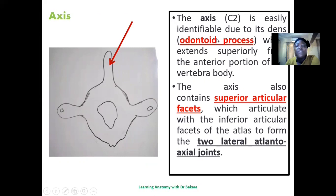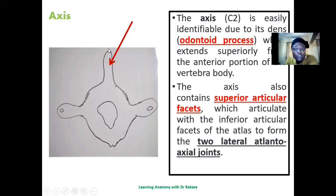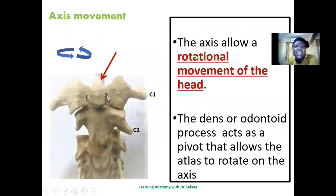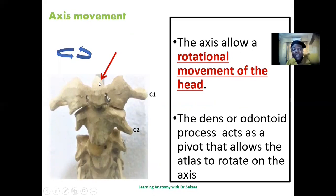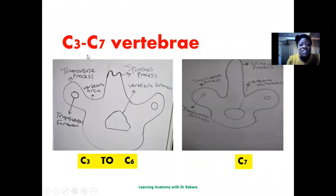The axis is the second cervical vertebra, easily identified by the presence of the odontoid process, also referred to as the dens. This odontoid process is an elongation that projects superiorly from the body. The body presents articulation points to connect to the atlas above. The odontoid process enters into the first cervical vertebra and acts like a pivot, through which rotatory movement is performed. So the kind of movement they allow is rotational.